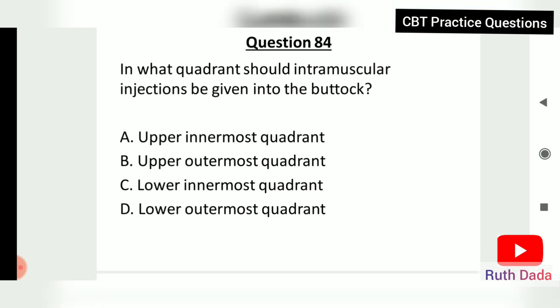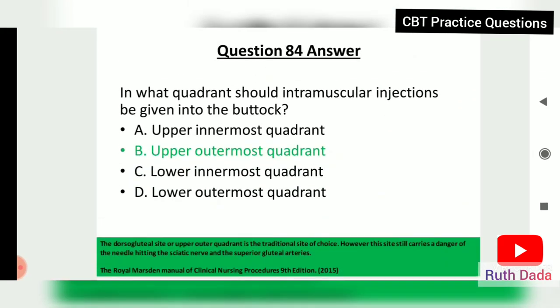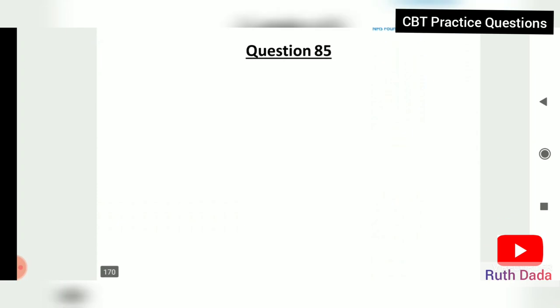Question 84: In which quadrant should an intramuscular injection be given into the buttock? The upper outermost quadrant. The dorsogluteal site or upper outer quadrant is the traditional site of choice; however, this site still carries the danger of the needle hitting the sciatic nerve and the superior gluteal arteries.